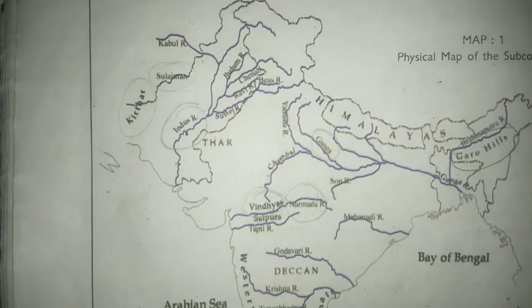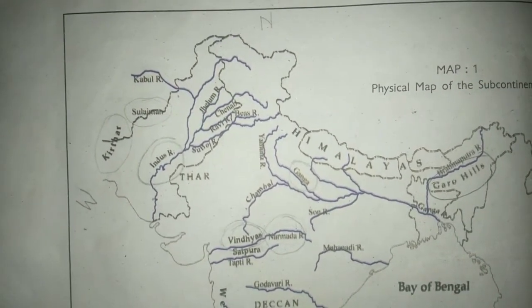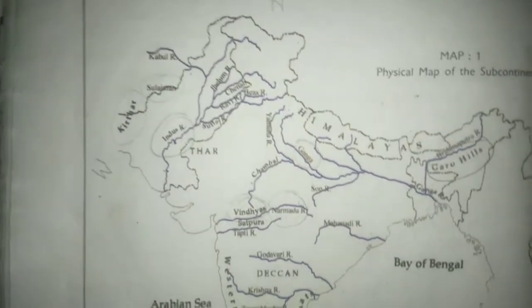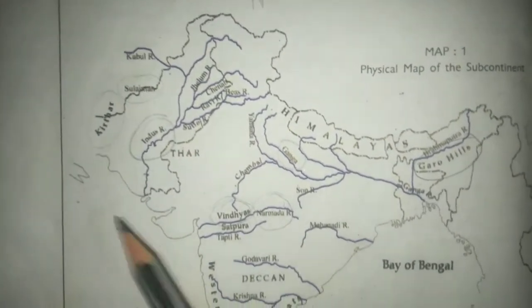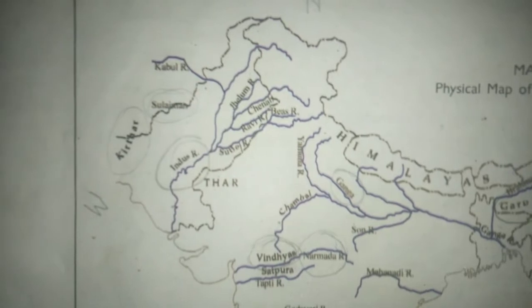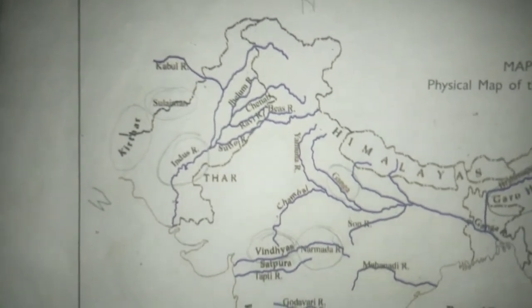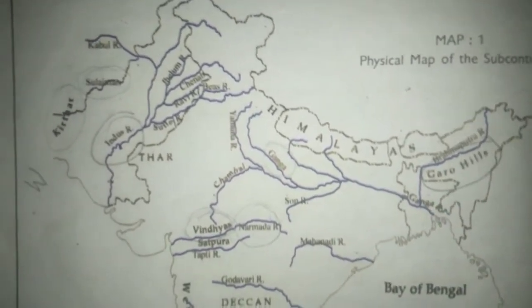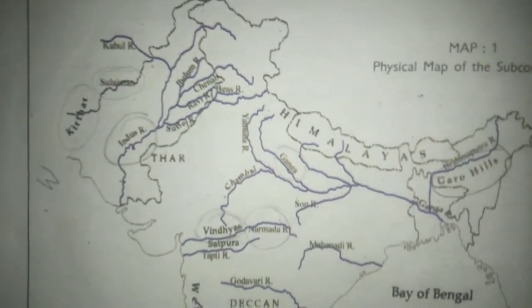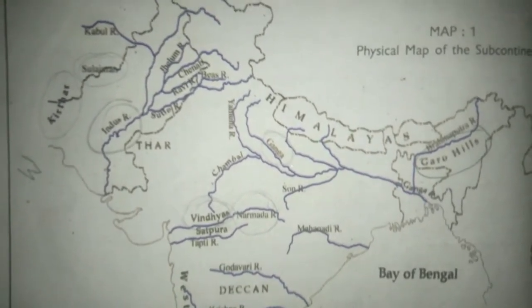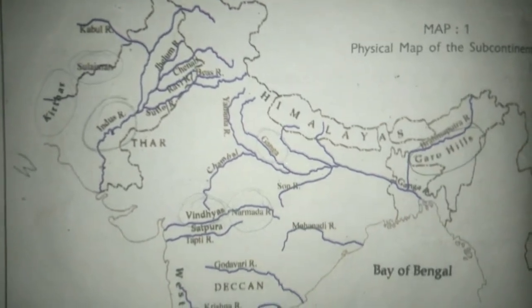Early people began to grow crops like wheat and barley in the Suleiman and Kirtar hills around eight thousand years ago. They also grew crops in the Garo hills in the northeast. Then they started cattle rearing to get meat, wool and skin. Rice was first grown north of the Vindhyas around 5000 years ago.